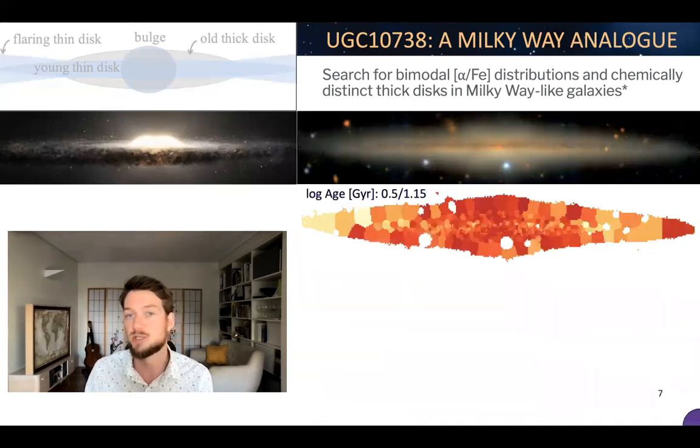More interestingly is to look at these stellar population properties. The age distribution shows us very similar to our Milky Way, meaning that towards the center, we're seeing a higher age, and along the plane of the thin disk, we're seeing a young population, where most of the young stars have been formed.